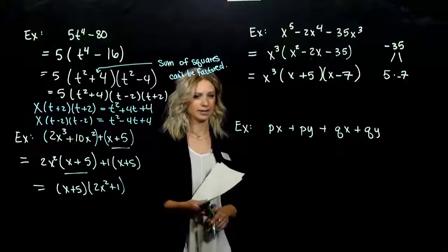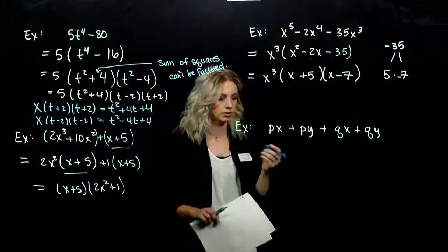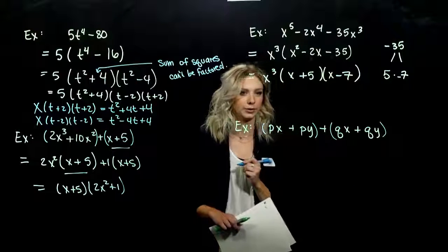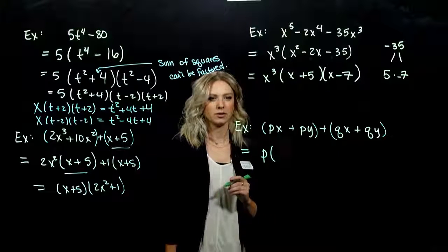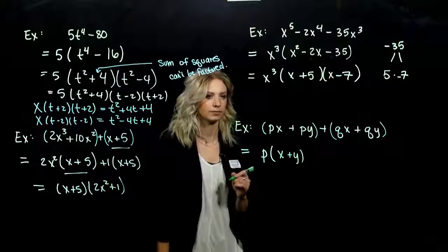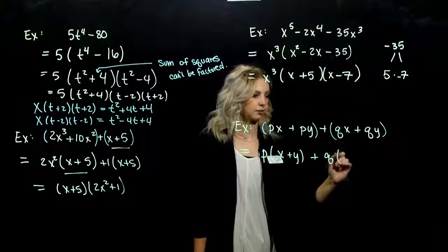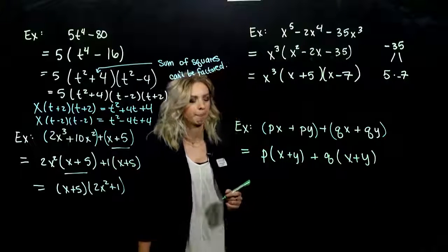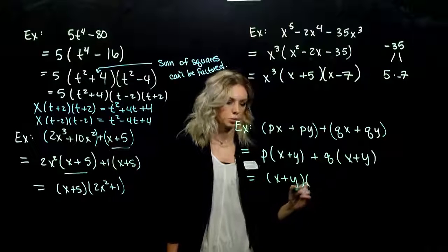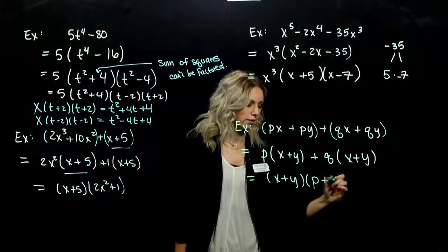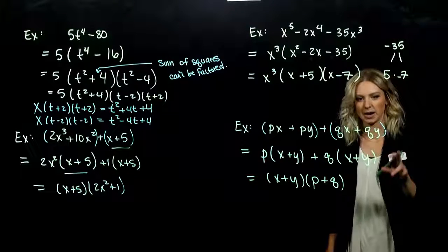The next example: is there anything in common between all terms? No. How many terms? Four — so we factor by grouping the first two and last two. Common between the first two is p, leaving (x+y). Common between the last two is q, leaving (x+y). Common between both resulting terms is the entire quantity (x+y), leaving (p+q). Final answer: (x+y)(p+q). If you aren't certain it's correct, FOIL it out and make sure you get back to the original.